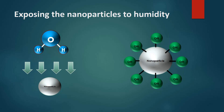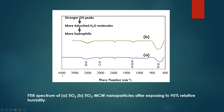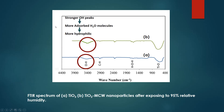First, exposing the nanoparticles to humidity. As I explained in session one, when the nanoparticles are exposed to humidity, OH groups are generated on the surface of the nanoparticles, and you can estimate the amount of these OH groups by FTIR analysis. This picture shows the FTIR spectrum of A) TiO2 and B) TiO2 microwave nanoparticles after exposing to 95 percent relative humidity. In this graph, stronger OH peaks mean the nanoparticles have absorbed more H2O molecules on their surface, and consequently the nanoparticles are more hydrophilic.